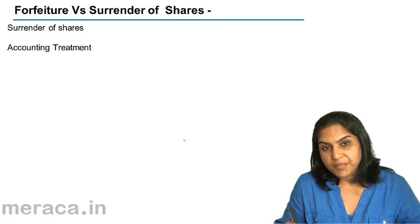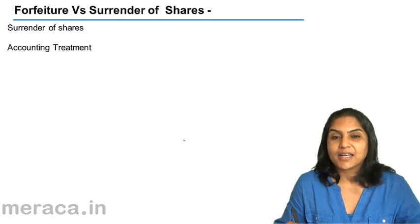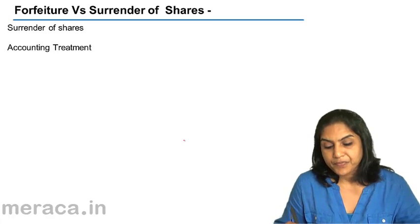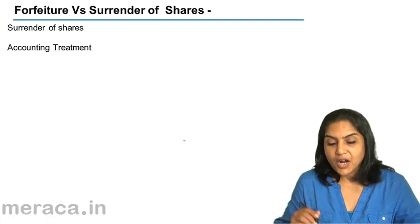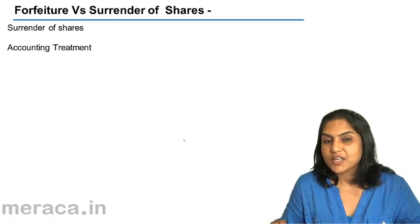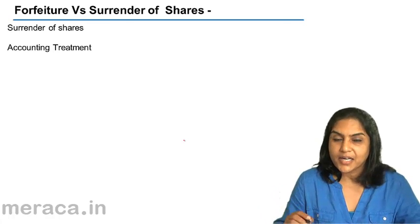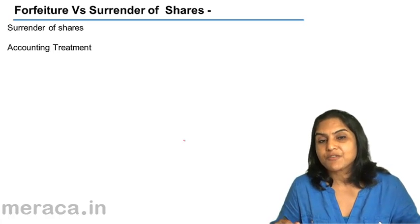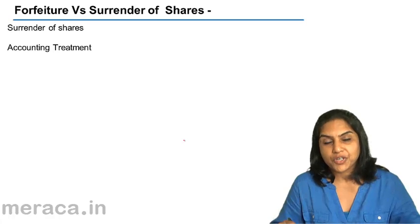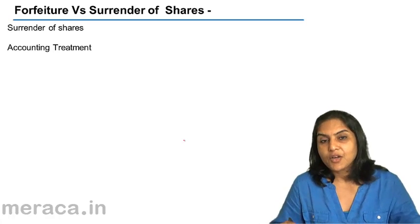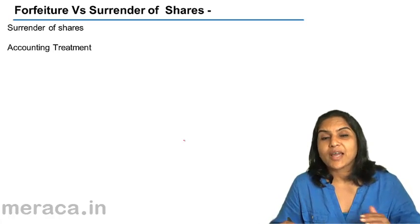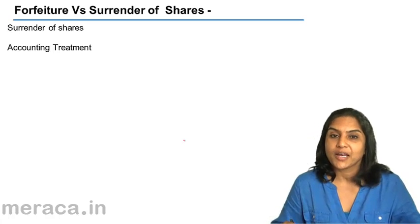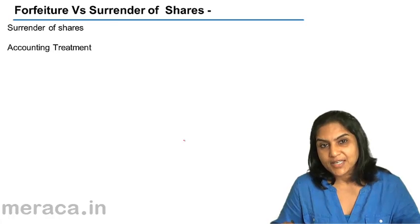The accounting treatment in this case is exactly the same as that for forfeiture of shares. As far as accounting entries are concerned, there is no difference. But by principle, surrender of shares means the shareholder is himself surrendering his shares, whereas in case of forfeiture, it is the company which forfeits the shares or cancels the membership of the shareholder. Accounting entries, however, would remain the same.